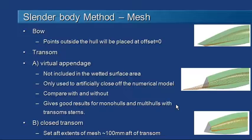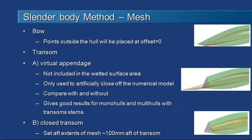If you decide you don't want to use the virtual appendage approach and just want to terminate the mesh abruptly at the transom, you can do that by setting the aft extents of the mesh to a point about 100 mils aft of the transom.